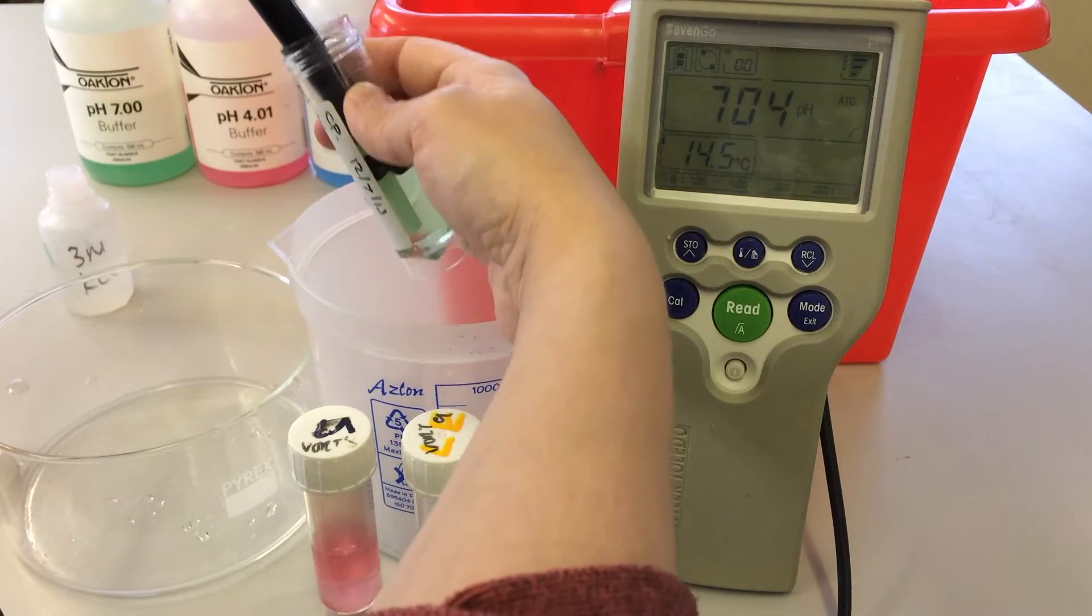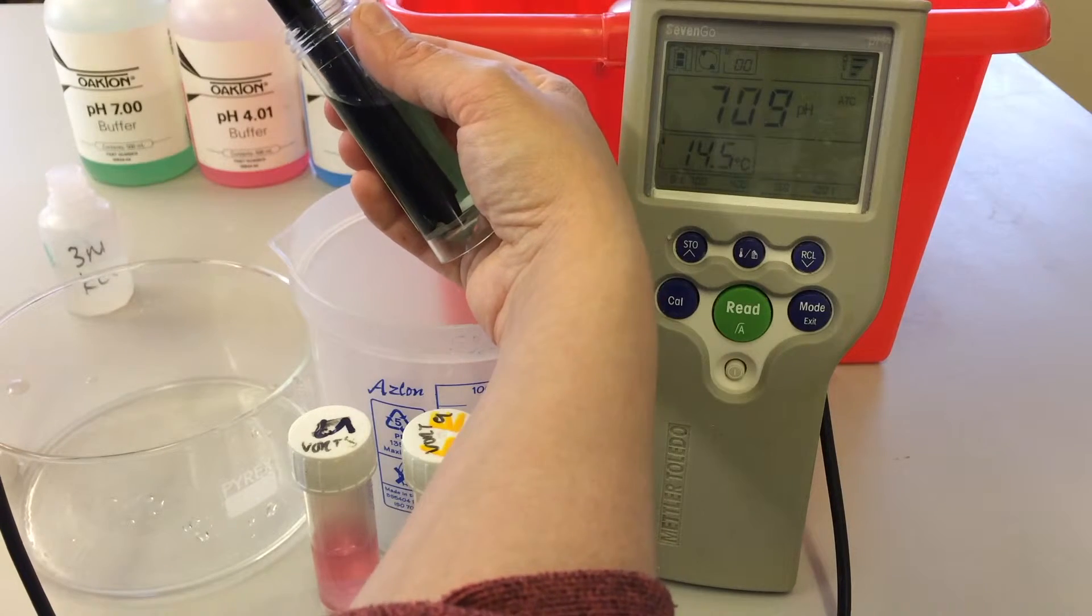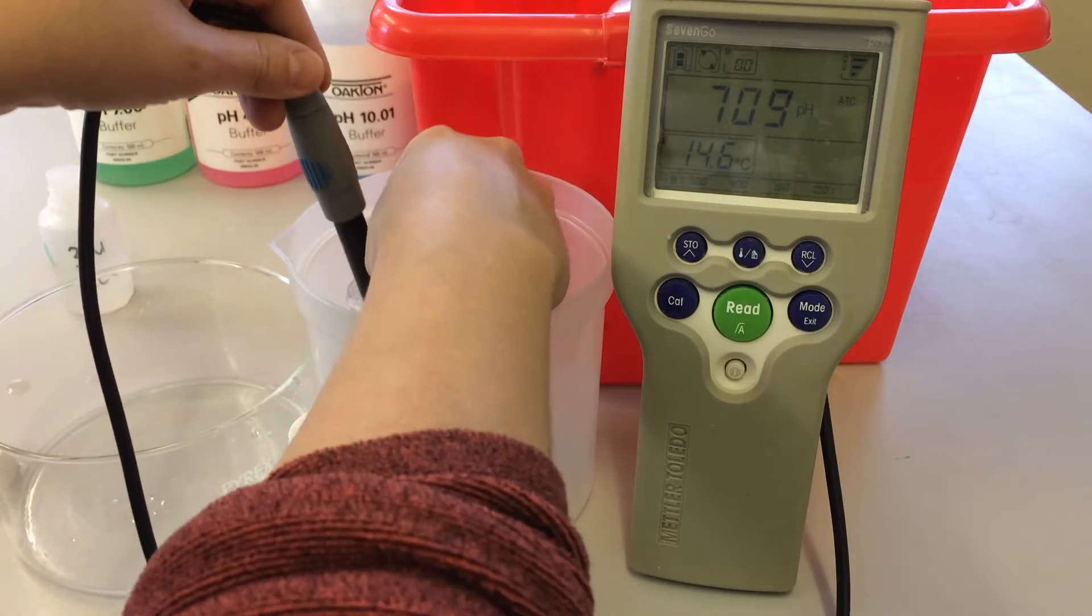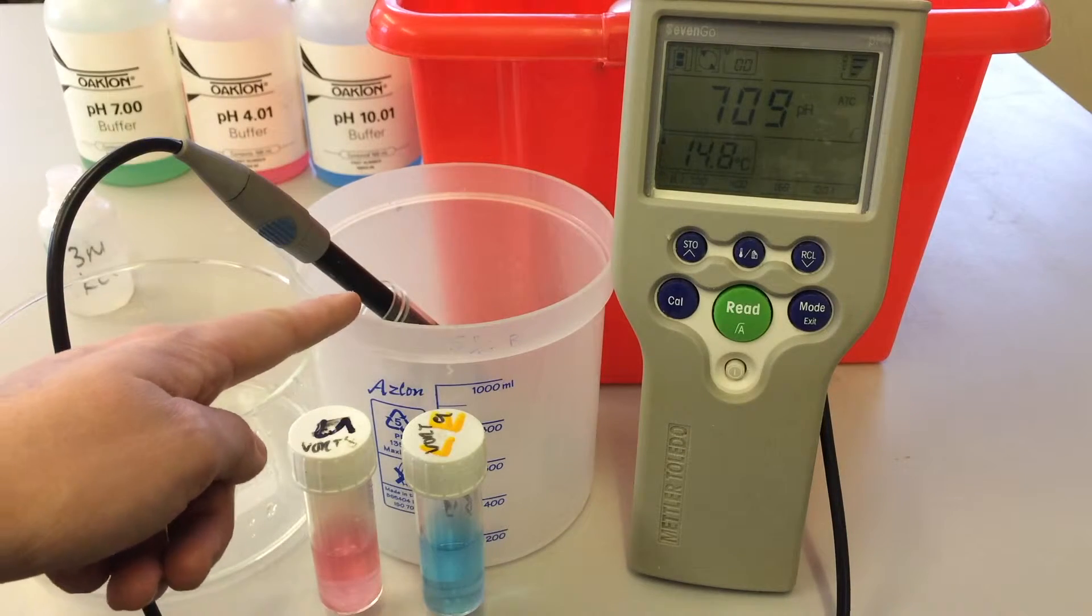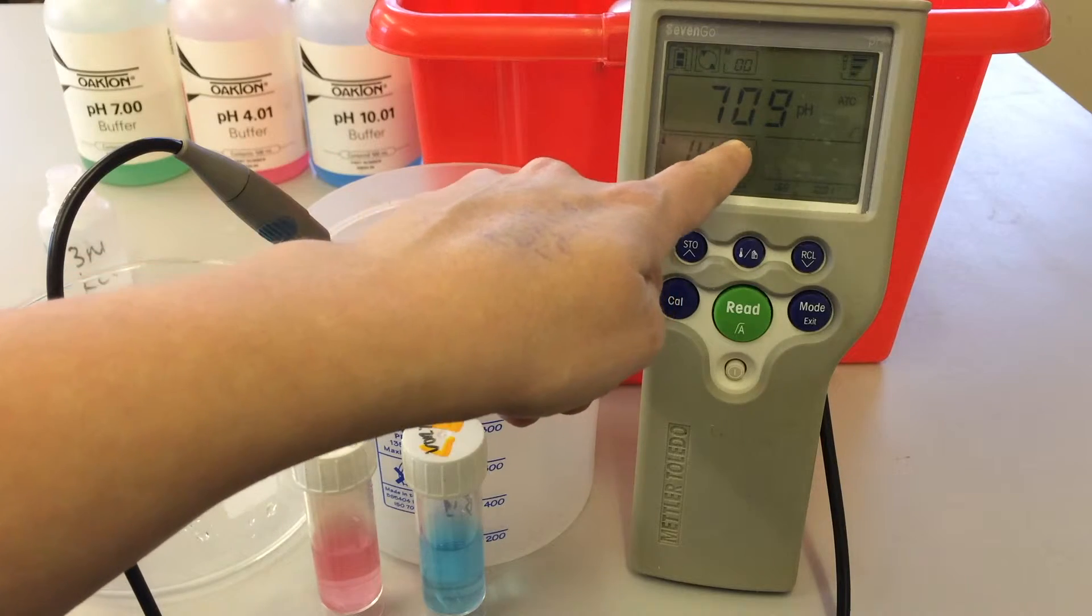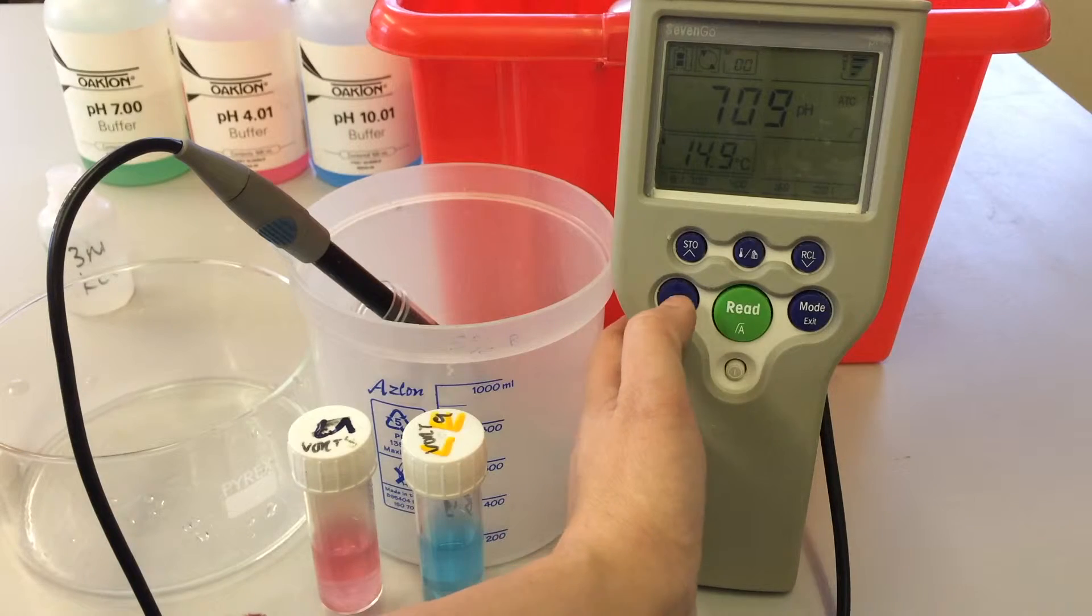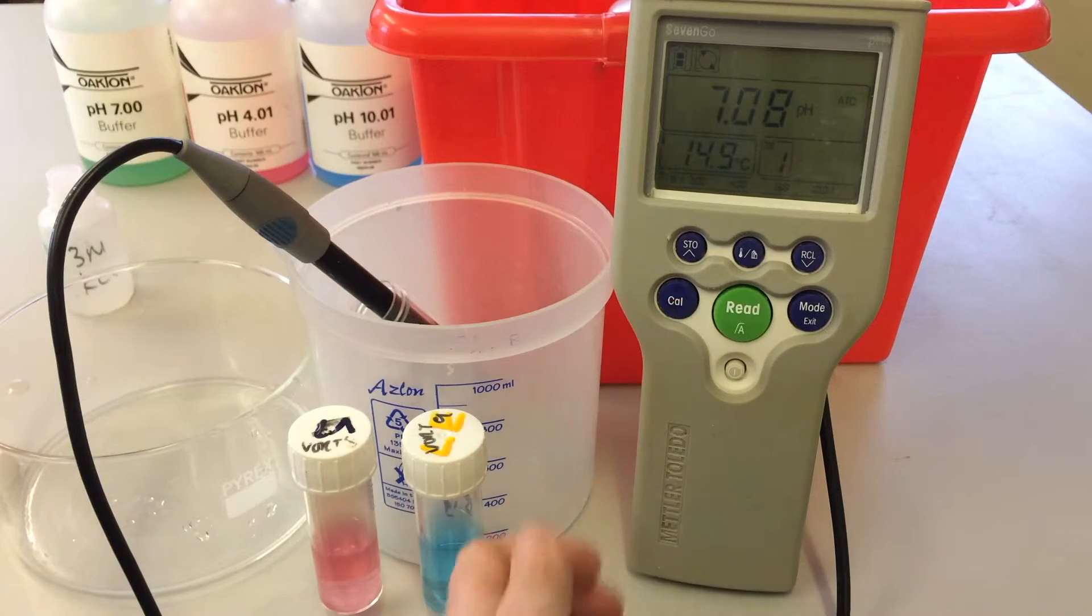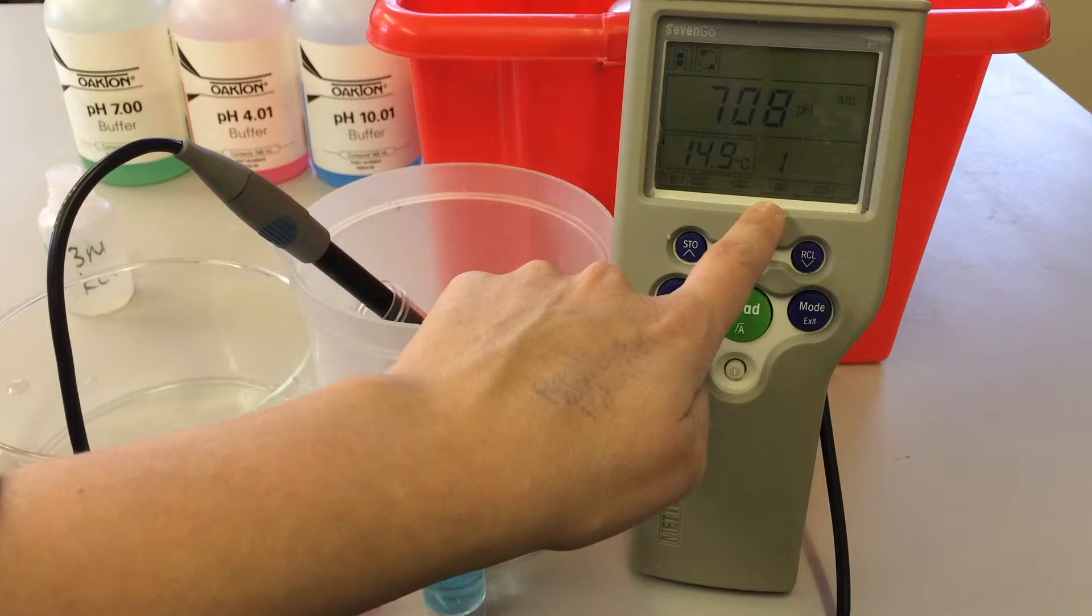When you put your probe in, give it a gentle shake to make sure you remove any air bubbles at the end of the probe there, and then place it into the beaker so that nothing spills out. You can see that pH value has already changed, but to calibrate it, all I do is simply press CAL and you'll see this flashing box saying CAL 1, so it's letting me know that I'm calibrating at the first level.